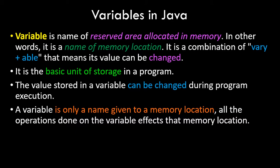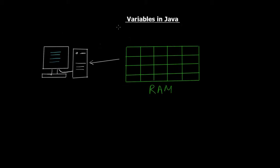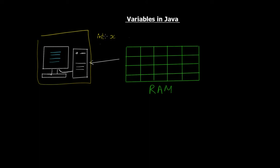Let's switch to the digital blackboard and see what happens when you create a variable in a Java program. Consider this as your PC — you've written some program and you're executing it. Let's say you create a variable x with data type integer, and you say x equals 5. So x is the name of the variable, integer is the data type, and it is going to hold the numeric value 5.